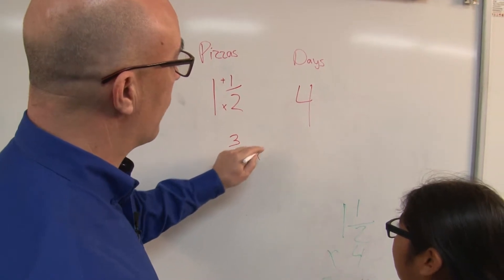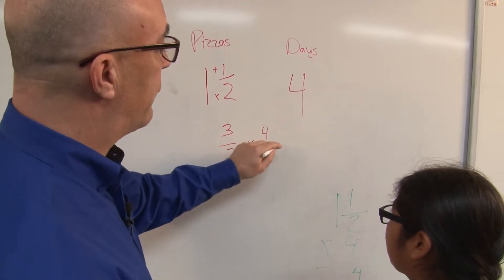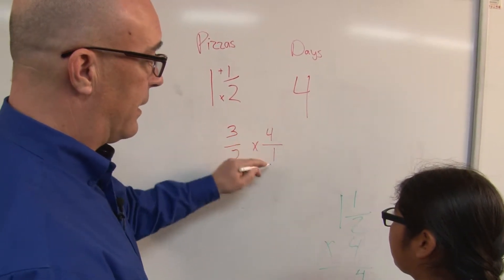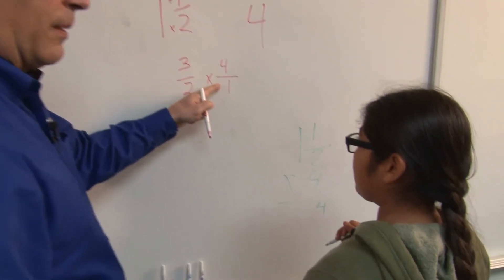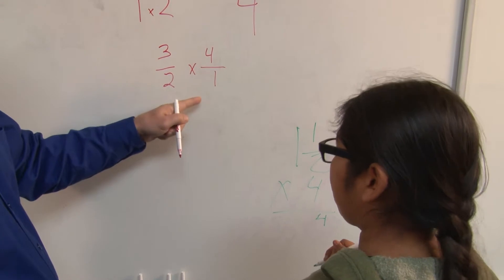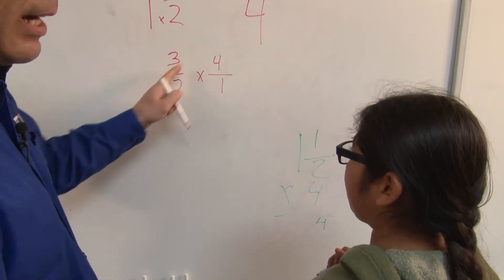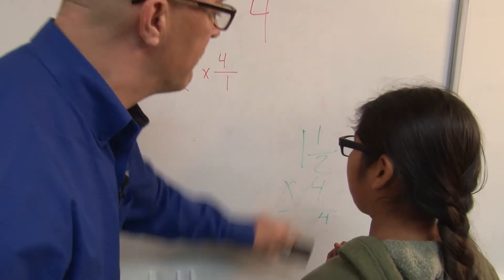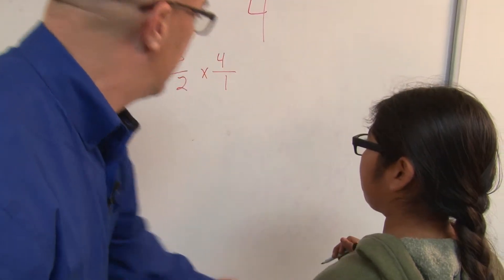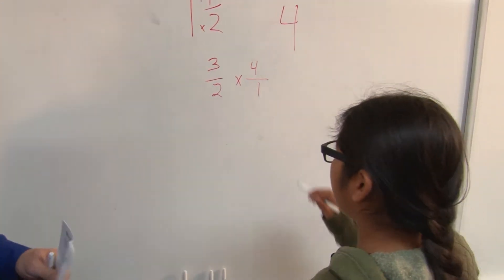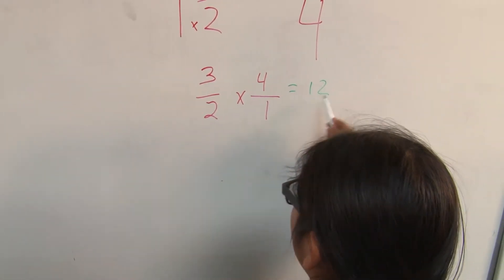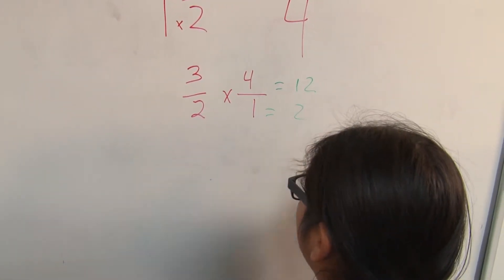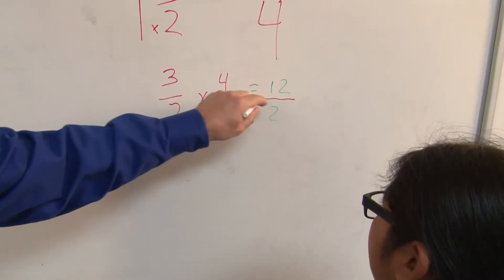And we're going to multiply that by 4. Now if I put 4 over 1, is that the same as 4? What's 4 divided by 1? 4. So it's the same thing, right? So this way we can just multiply straight across with the fractions like that. So let's go ahead and multiply straight across. 3 times 4 is 12. Okay. And 2 times 1 equals 2. Good. So we still have our fraction line there.